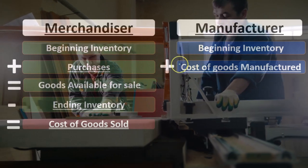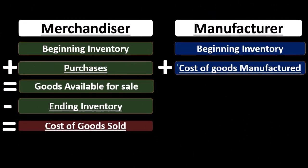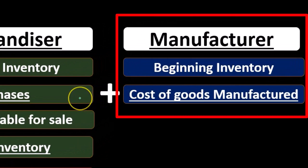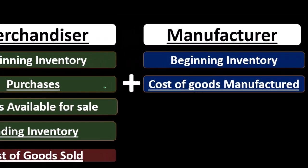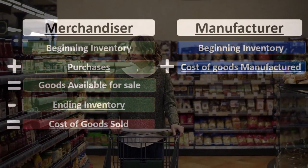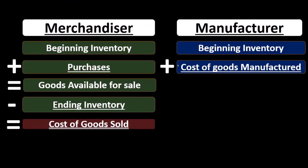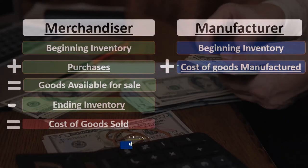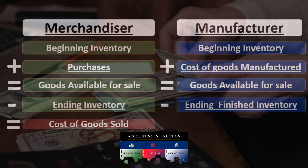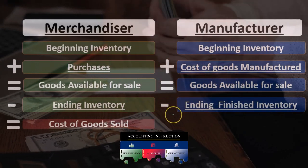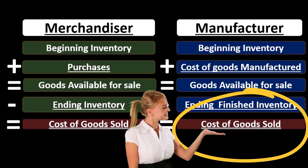Where do we get that cost of goods manufactured number? We figure it out through our production process. That number replaces purchases — that's the big difference. You can see the formulas are basically similar: purchases represents the activity of a merchandiser, while cost of goods manufactured represents that the company not only purchased materials but made them into inventory. That gives us the cost of goods available for sale, and then we subtract out ending finished goods inventory to arrive at cost of goods sold.